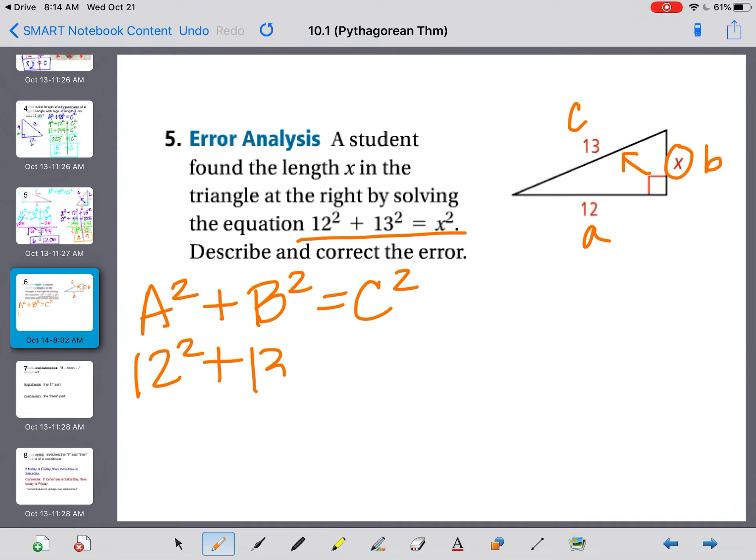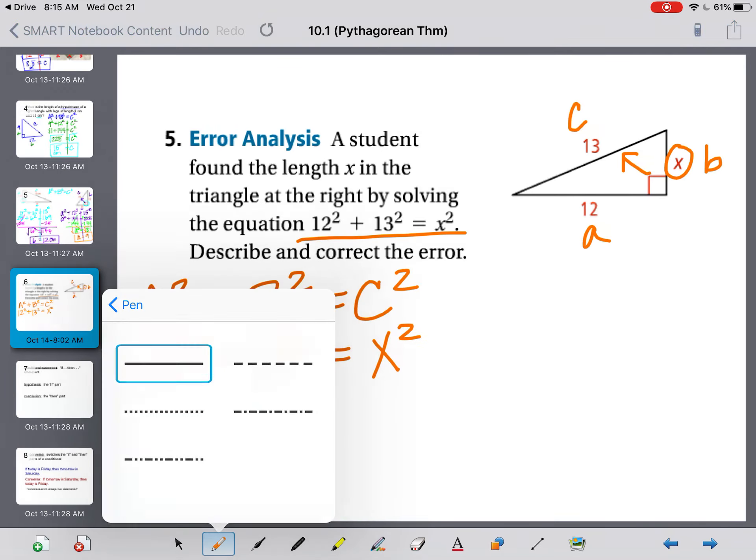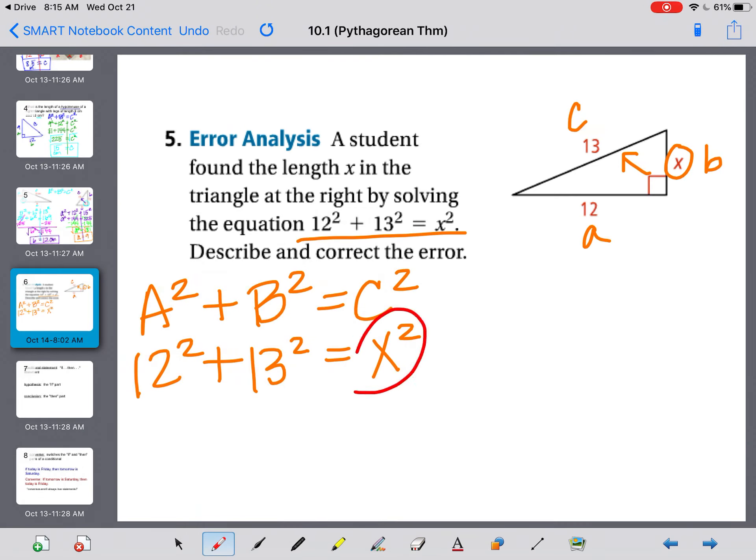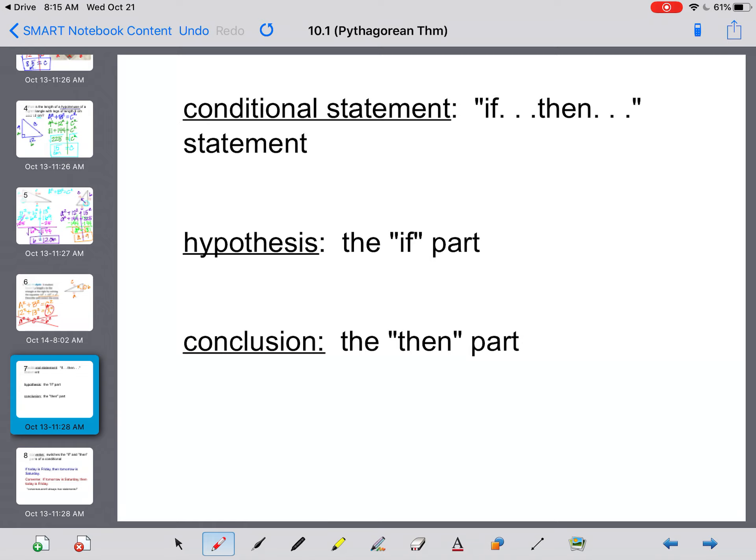So what we need to look at, they have 12 squared plus 13 squared equals X squared. Is X squared the hypotenuse like we need? No. So that was the issue that they made. They put it in the wrong order. They actually have A squared plus C squared equals B squared. And you cannot change the order. It always has to equal the hypotenuse.